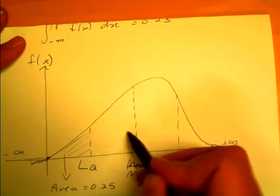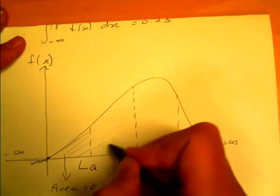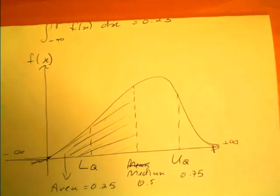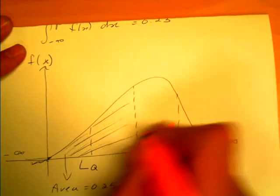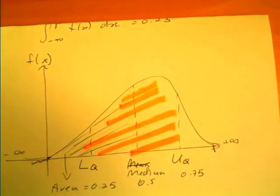So the mean means half the area underneath including into this region, the upper quartile means 75% of the area. So that helps us to visually understand what they mean by median, upper, lower quartiles and so on.